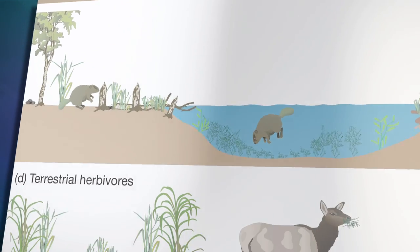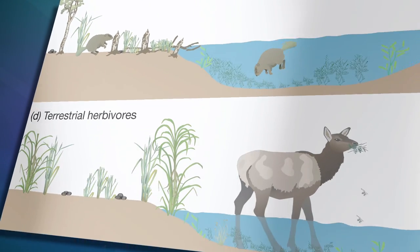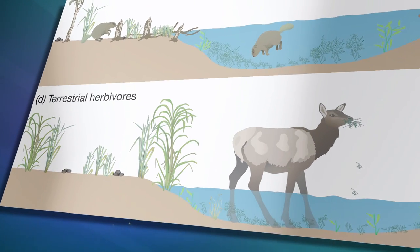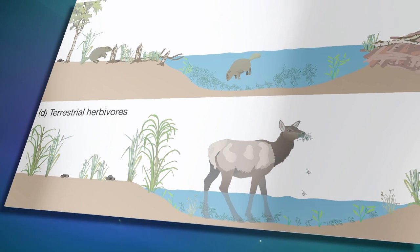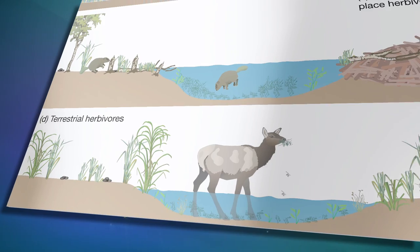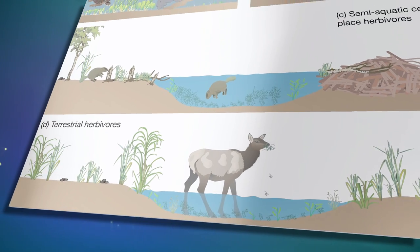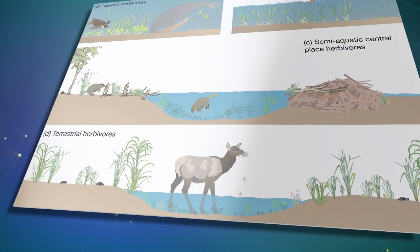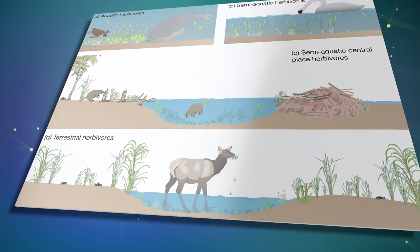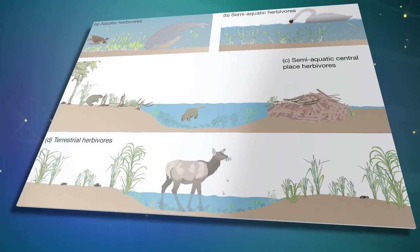Other herbivores such as the moose and several deer species forage on aquatic plants, move to the land, and poop there, thus moving nutrients from the aquatic to the terrestrial environment.